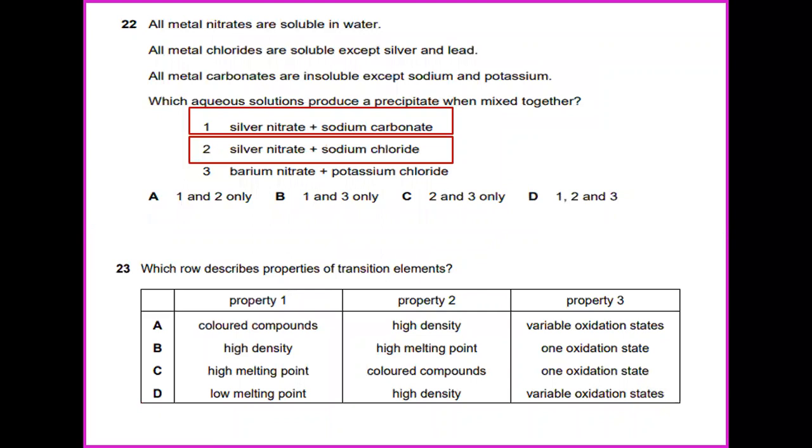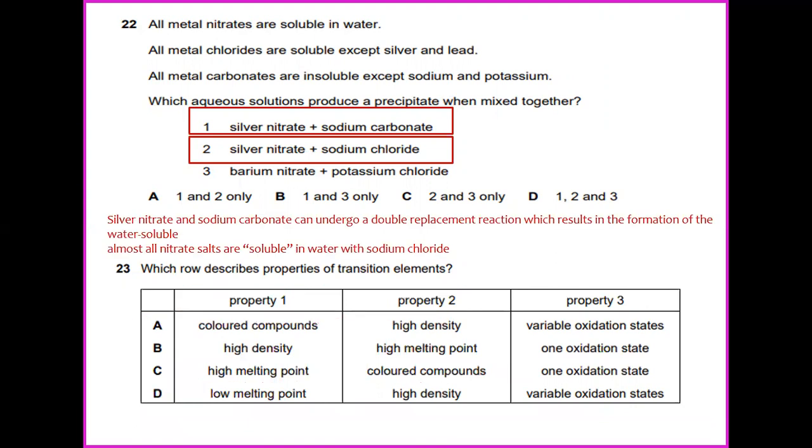All metal nitrates are soluble in water. All metal chlorides are soluble except silver and lead. All metal carbonates are insoluble except sodium and potassium. Which aqueous solutions produce a precipitate when mixed together? Silver nitrate reacts with sodium carbonate and silver nitrate reacts with sodium chloride. When silver nitrate and sodium carbonate undergo a double replacement reaction, we should see the formation of a water-insoluble product. And for silver nitrate reacting with sodium chloride, almost all nitrate salts are soluble in water with sodium chloride. So the answer for this would be 1 and 2, which is A.